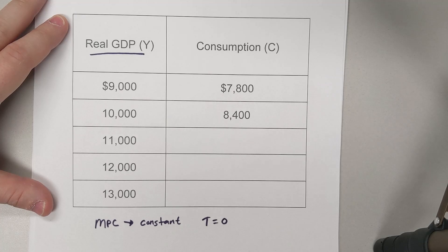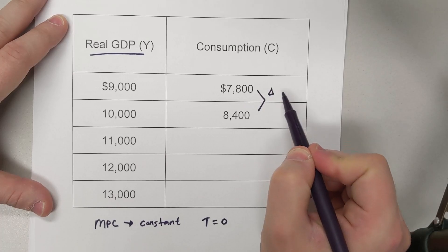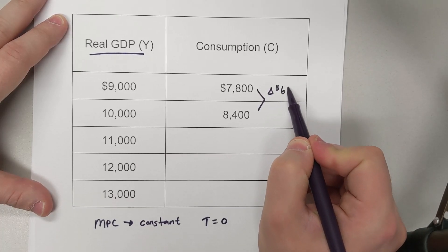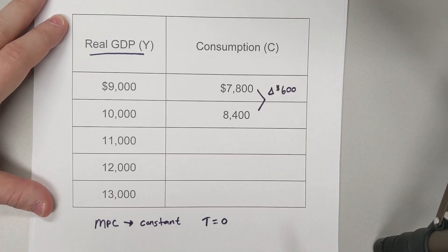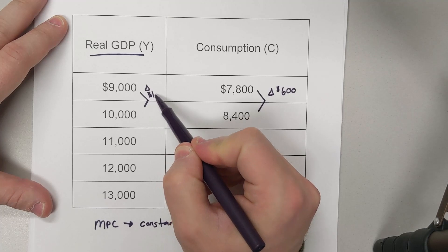What do we know here? We know the MPC is constant, since we're given that, it must be important. Remember, the MPC looks at how consumption changes. In this case, the change is $600 given the change in GDP, which was $1,000.